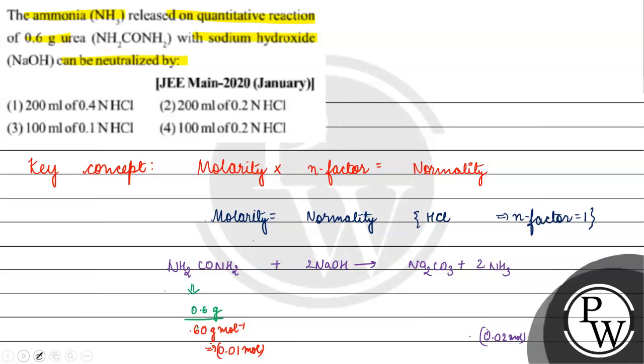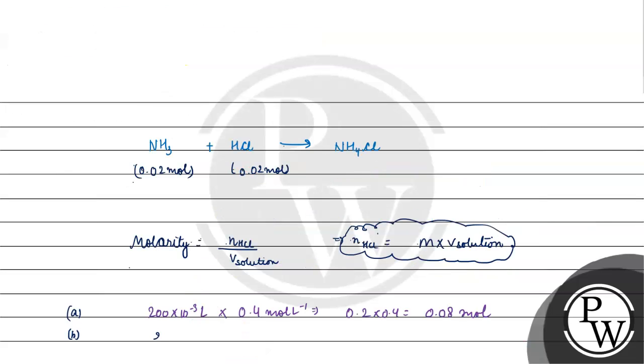Option B has 200 ml of 0.2 normal. In molarity terms, 0.2 × 0.2 gives 0.04 moles of HCl. So this option is incorrect.